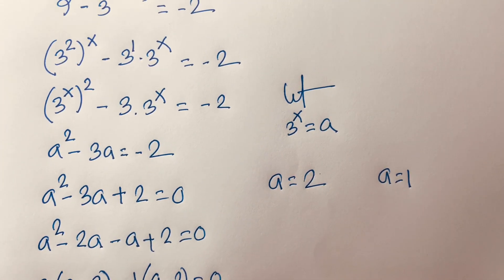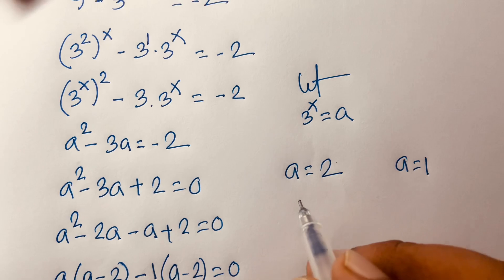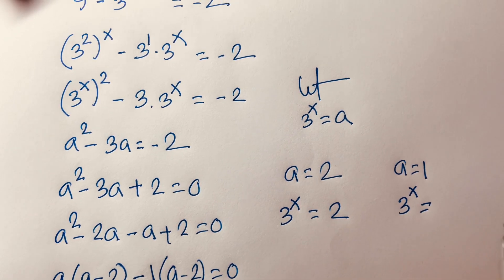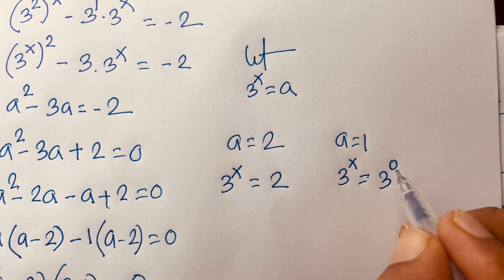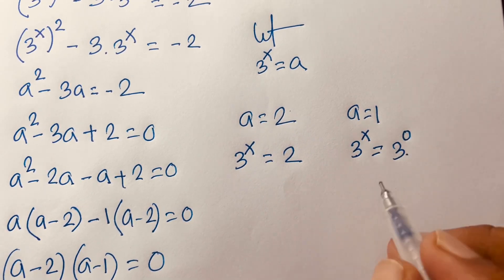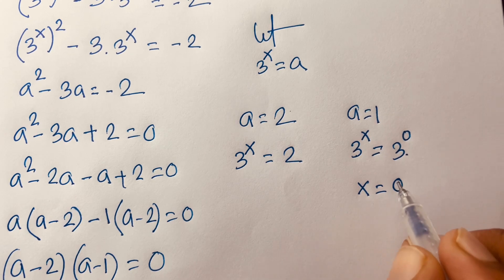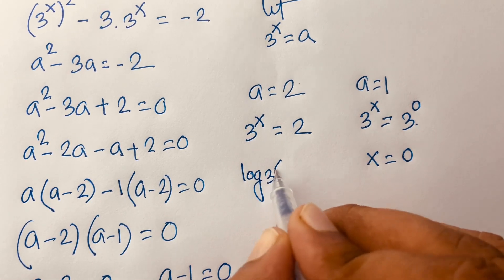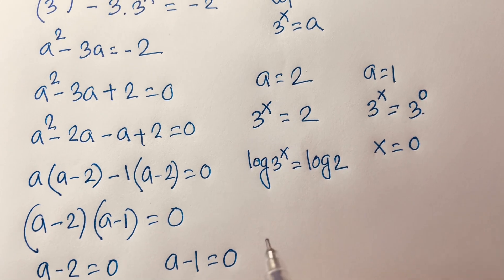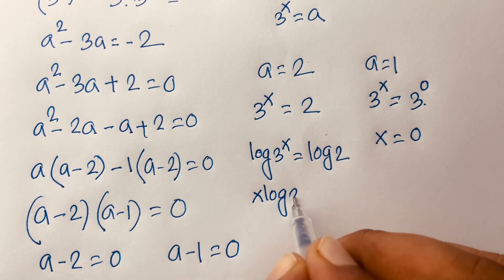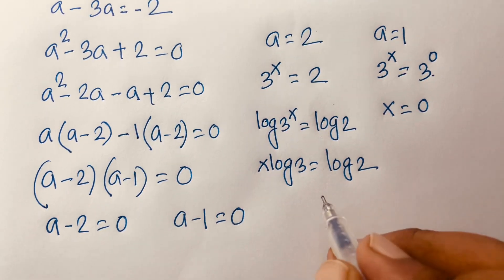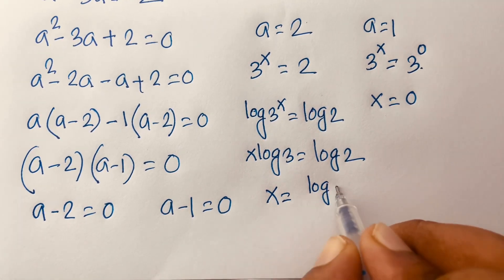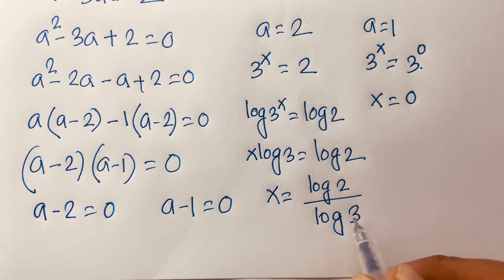Remember that a equals 3^x. So when a equals 1, we have 3^x equals 1 equals 3^0, and since the bases are the same the exponents are equal, so x equals 0. When a equals 2, we have 3^x equals 2. Taking log of both sides gives x times log 3 equals log 2, and dividing both sides by log 3 gives x equals log 2 over log 3.